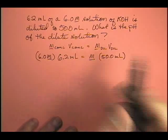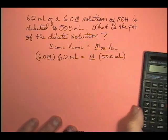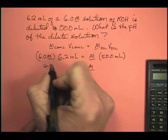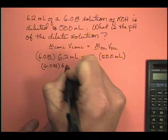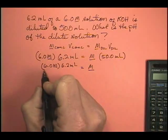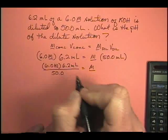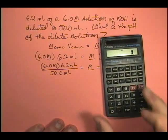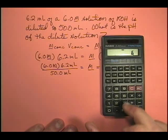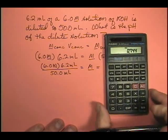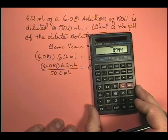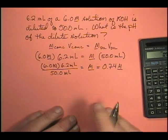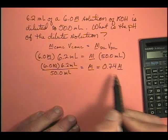My first job is to figure out the molarity of this dilute solution. After the algebraic rearrangement, the molarity of the dilute solution equals 6.0 molar times 6.2 milliliters divided by 50 milliliters. Using the calculator: 6.0 times 6.2 divided by 50 equals 0.744. Going to 2 sig figs, that's 0.74 molar. That's a reasonable number — it started out at 6 and we diluted it to 50, so it's less than 6.